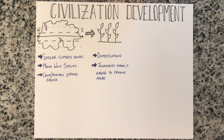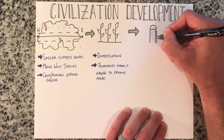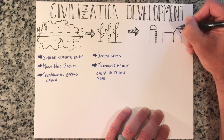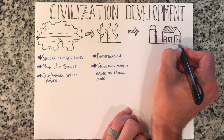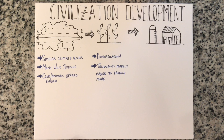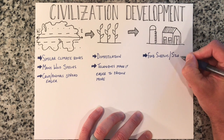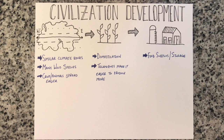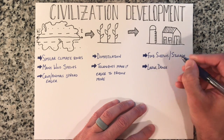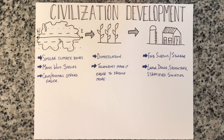Populations start to get larger in certain areas where farming techniques allow for a surplus of food. Now a nomadic lifestyle is no longer a necessity as a surplus of food has become available. This leads to large, dense, sedentary, stratified societies that can start to specialize in other areas than farming. As civilizations do not have to worry about surviving anymore, they can use their time to help develop their civilizations.